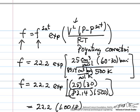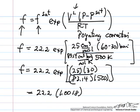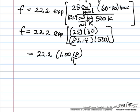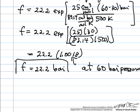The term in the exponent is quite small, so that the correction is insignificant at this pressure, so the fugacity at 60 bar pressure is 22.2 bar. So it takes a large increase in pressure to create a significant increase in fugacity for a liquid.